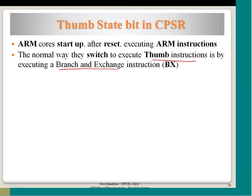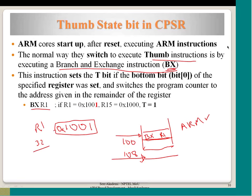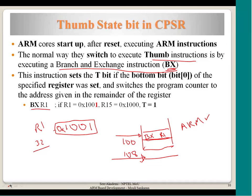There was a brief technical interruption in the recording. To continue: the ARM core starts in ARM state after reset, and later by executing a Branch and Exchange (BX) instruction it switches to Thumb state.